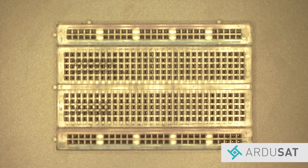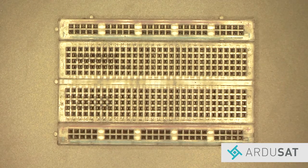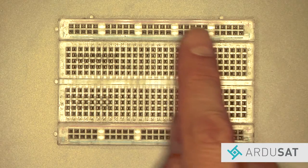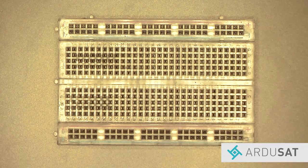A breadboard is a tool used for quickly and easily building circuits. The outside columns are called rails. There are power and ground rails which are used for connecting power to ground to the breadboard.